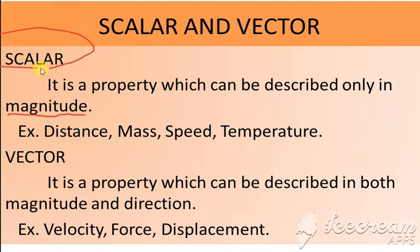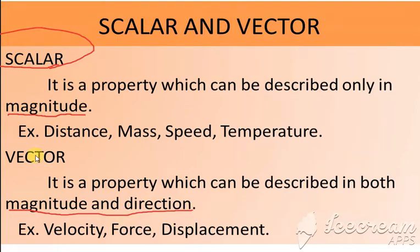Scalar is a property which denotes only magnitude, but vector is a property which describes both magnitude and direction. Whatever quantities we are taking, if we take both magnitude and direction, that is said to be vector. Only magnitude — that is scalar; magnitude and direction — that is vector.